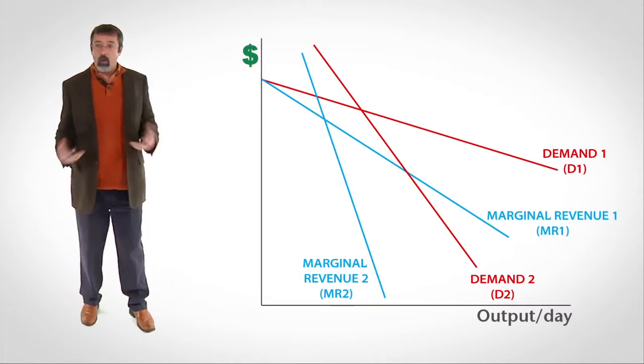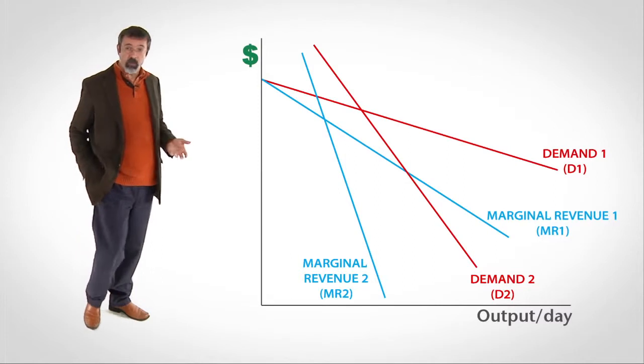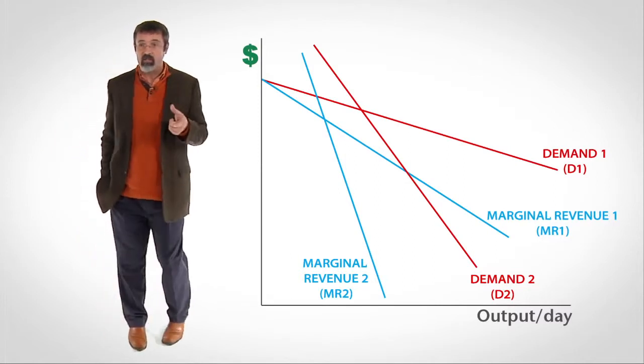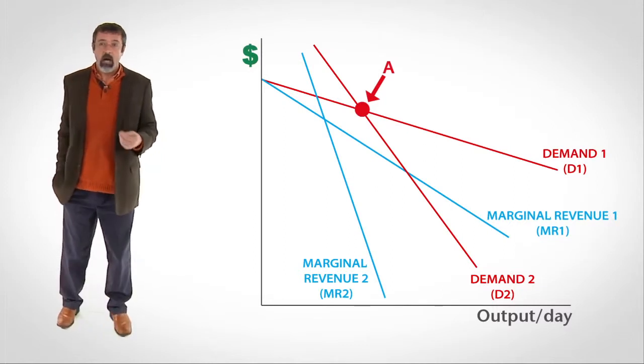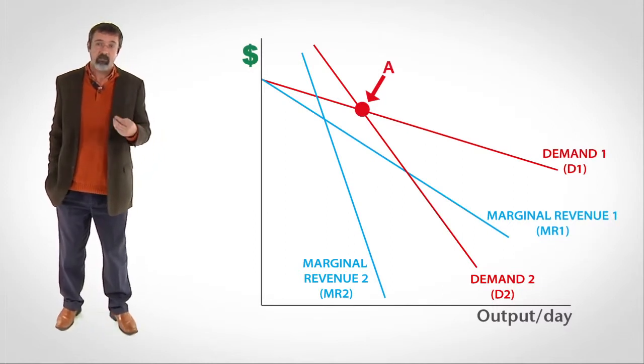In equilibrium, all of the oligopoly firms will charge the price that's found at the intersection of the two demand curves. At point A, all of the oligopoly firms are charging the same price for their products.